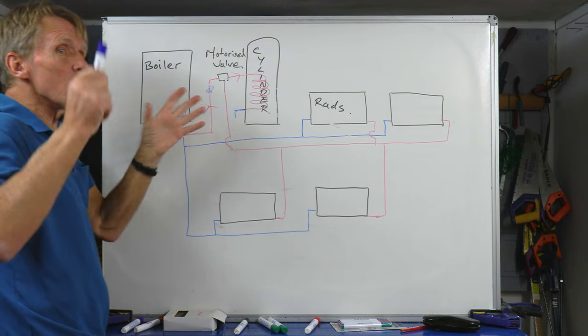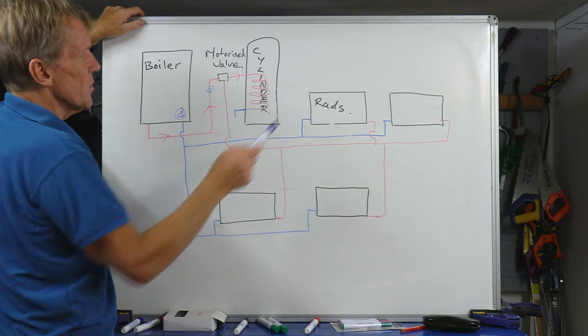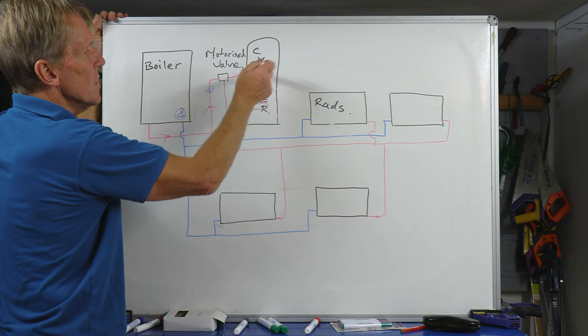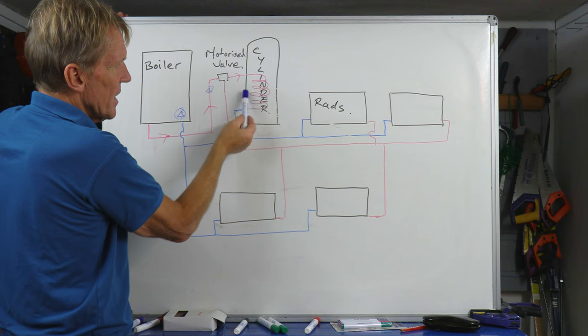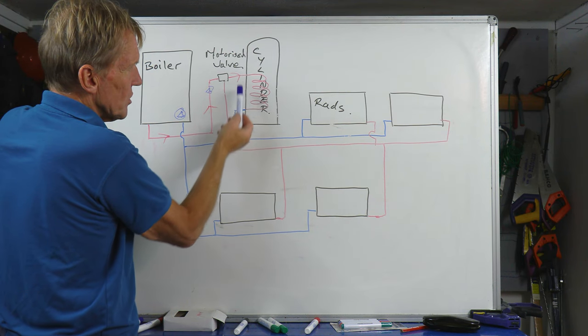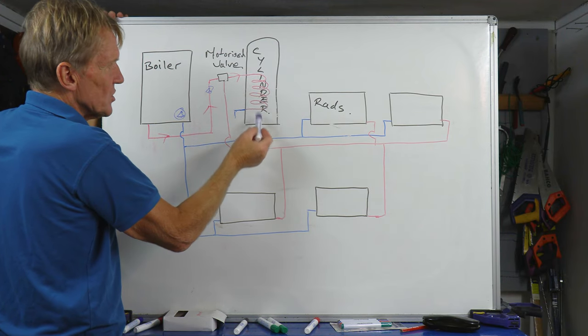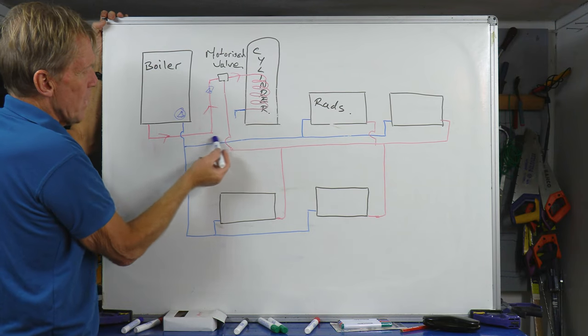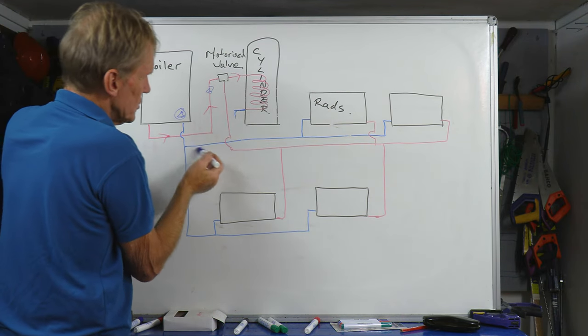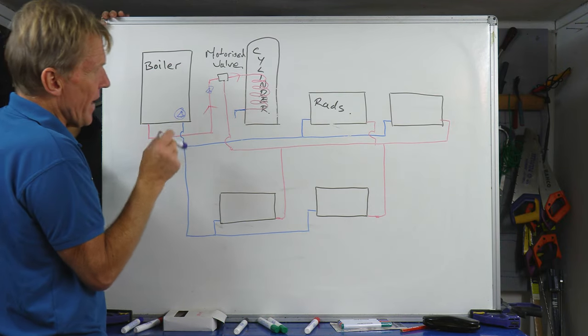Now the motorized valve is where it splits up to go through to the radiators, the central heating, or it goes through to the cylinder for the hot water. That water inside the cylinder is in a coil so it's not mixed with the tap water. It goes through the coil which transfers the heat to the water which comes out your taps, and then it makes its way back to the boiler, which I haven't joined up at this moment because I want to explain something about that.